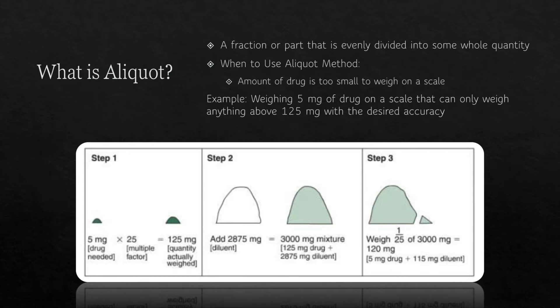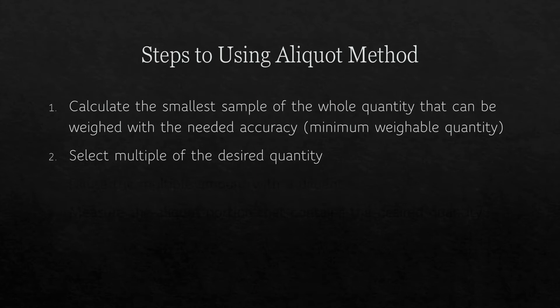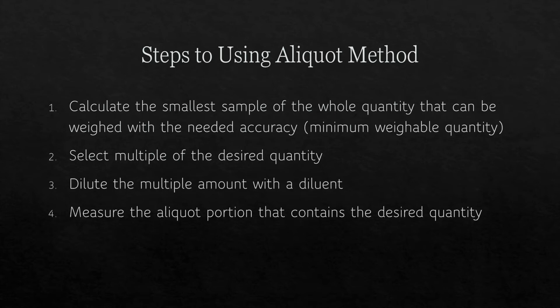The diagram below is a quick introduction into the aliquant method, and we're going to go into each step with more detail in the coming slides. Step one: calculate the smallest sample of the whole quantity that can be weighed with the needed accuracy — this will be your minimum weighable quantity. Step two: select the multiple of the desired quantity. Step three: dilute the multiple amount with a diluent. And the final step: measure the aliquant portion that contains the desired quantity.